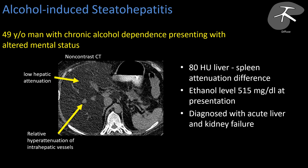Here is a case of alcohol-induced steatohepatitis: a 45-year-old man with chronic alcohol dependence presenting with altered mental status. His liver is very low in attenuation, almost as low as the subcutaneous or mesenteric fat. Comparing the spleen to the liver, in severe alcohol-induced steatosis these are the most fatty livers seen in general practice. The Hounsfield unit difference between the liver and spleen was 80, and he was acutely intoxicated at a very high level on top of chronic alcohol use.